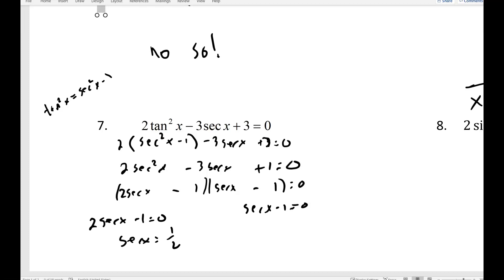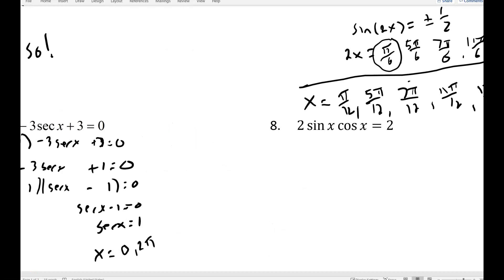So this would be secant x equals 1 half, which we know doesn't work because that means cosine is equal to 2. So you can cross that one out. Or secant x equals 1. Of course, secant x would be equal to 1 when cosine is equal to 1. So that would be x equals 0 and 2 pi.